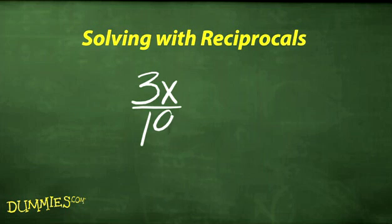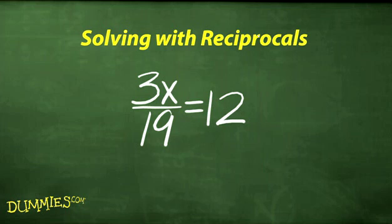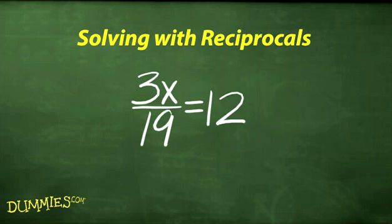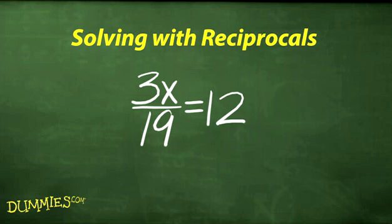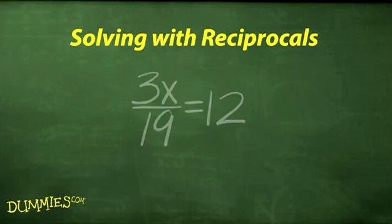Multiplication and division are opposite operations. Multiplication is undone by division and vice versa. Another option may work better at times. That's using the reciprocal, or multiplicative inverse, of the number that you're trying to get rid of. Choose this alternative if a fraction is multiplying the variable, as in 3x over 19 equals 12.